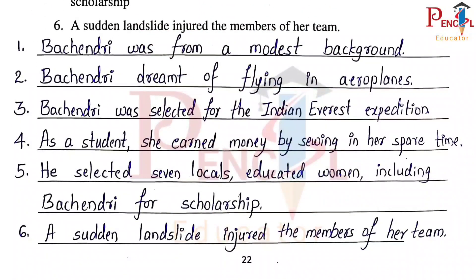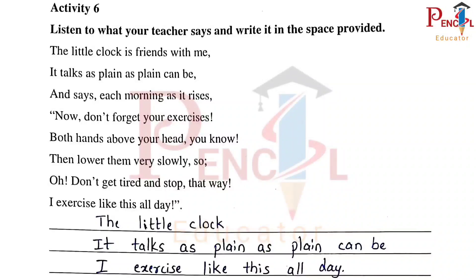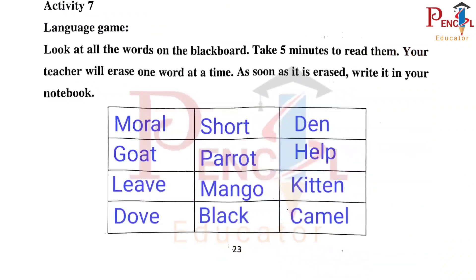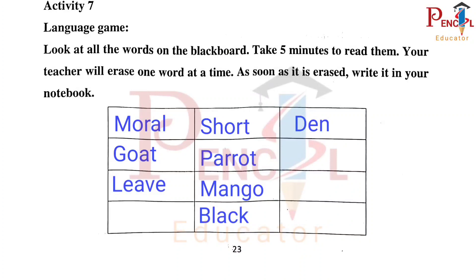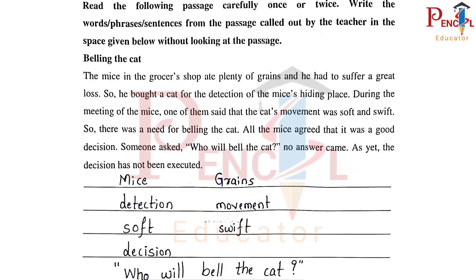Activity 5, Activity 6 — listening to teacher, students write praises or sentences. Activity 7 — Language Game: students have to remember the words present on the blackboard and, by remembering, write those words in the notebook. Assessment Activity.